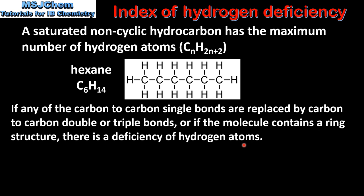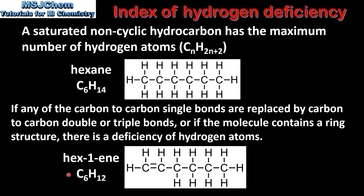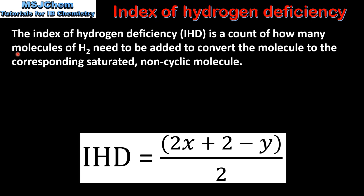So here we have hex-1-ene, which has a carbon to carbon double bond. If we look at the molecular formula we can see that it has two fewer hydrogen atoms than the molecular formula for hexane. Therefore it has a deficiency of hydrogen atoms. The index of hydrogen deficiency is a count of how many molecules of hydrogen need to be added to convert the molecule to the corresponding saturated non-cyclic molecule.